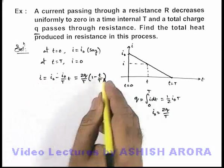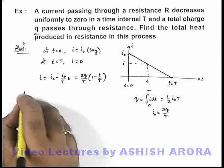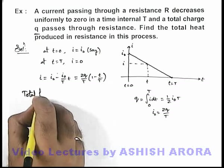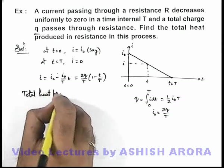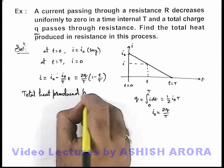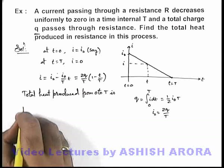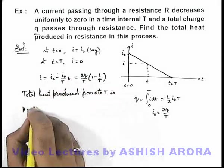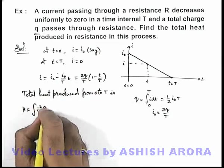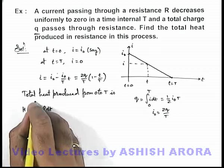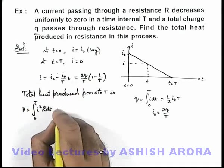Now, as we know the current as a function of time, we can easily calculate the total heat produced from zero to t time. This heat we can write as: since current is time-varying, we'll use integration of i²R dt from zero to T.